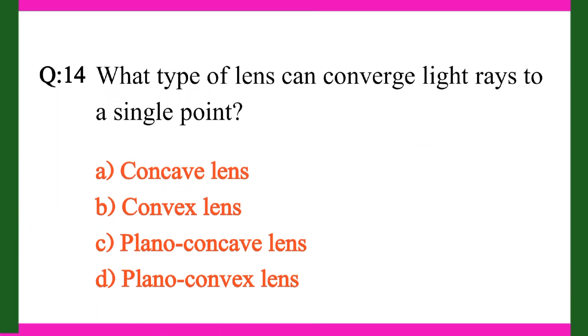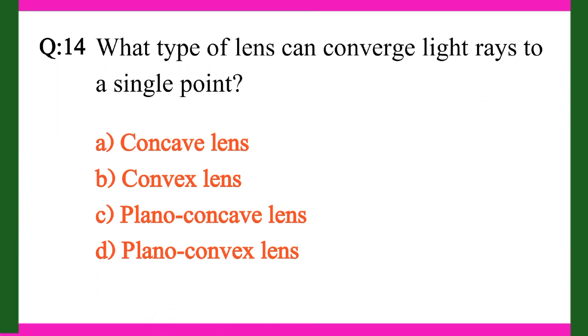Question 14. What type of lens can converge light rays to a single point? A. Concave lens. B. Convex lens. C. Plano concave lens. D. Plano convex lens. Right answer is B. Convex lens.